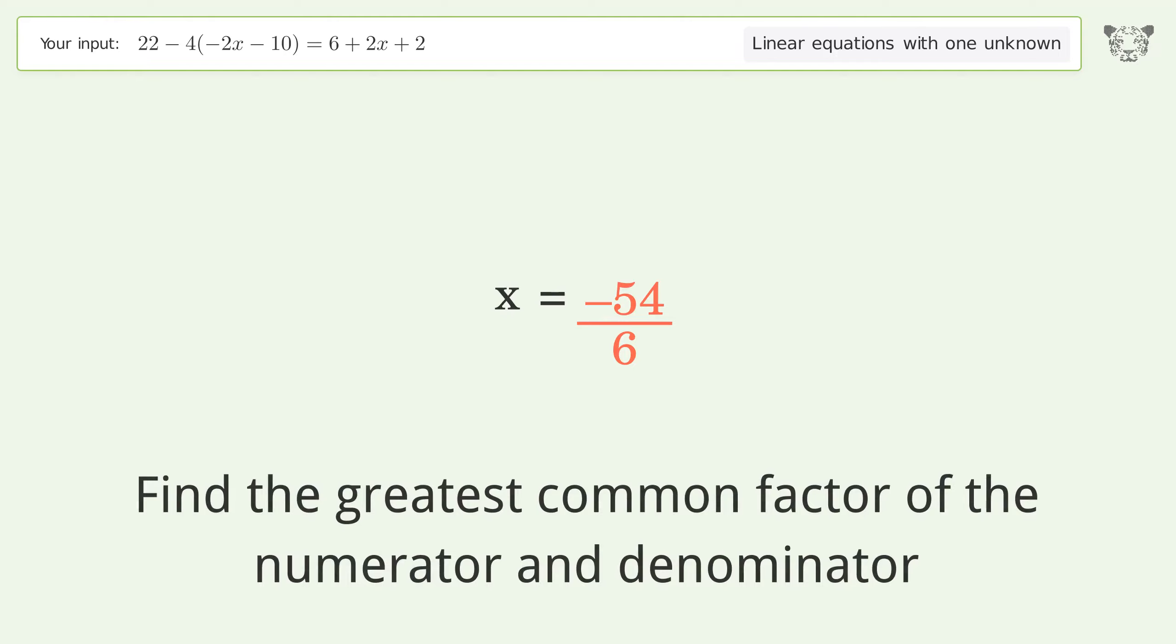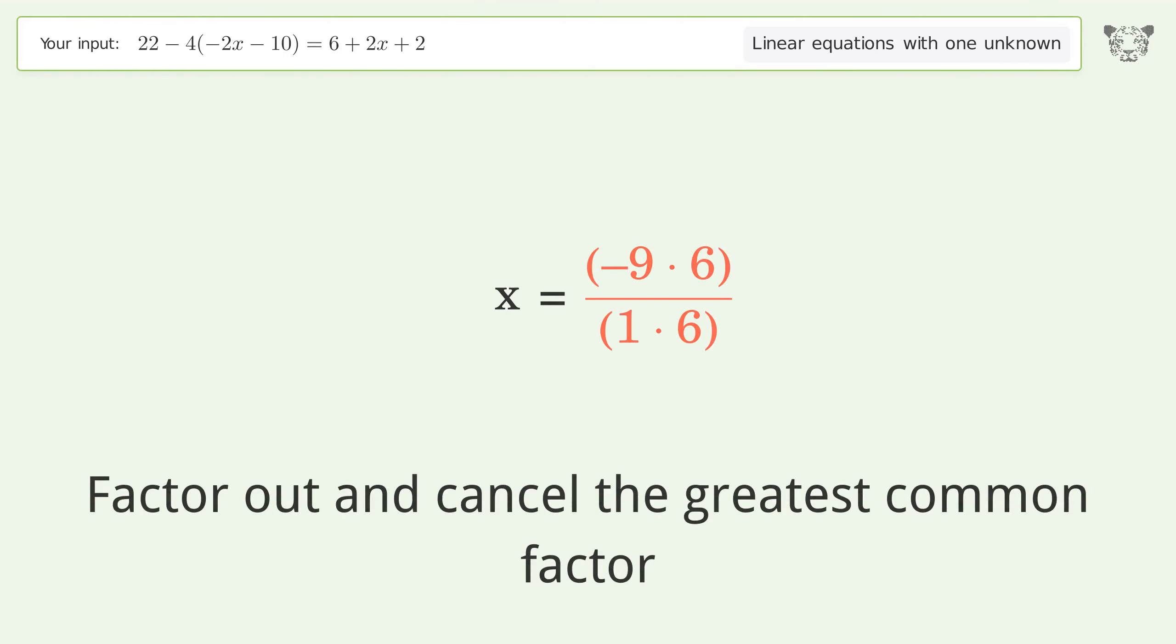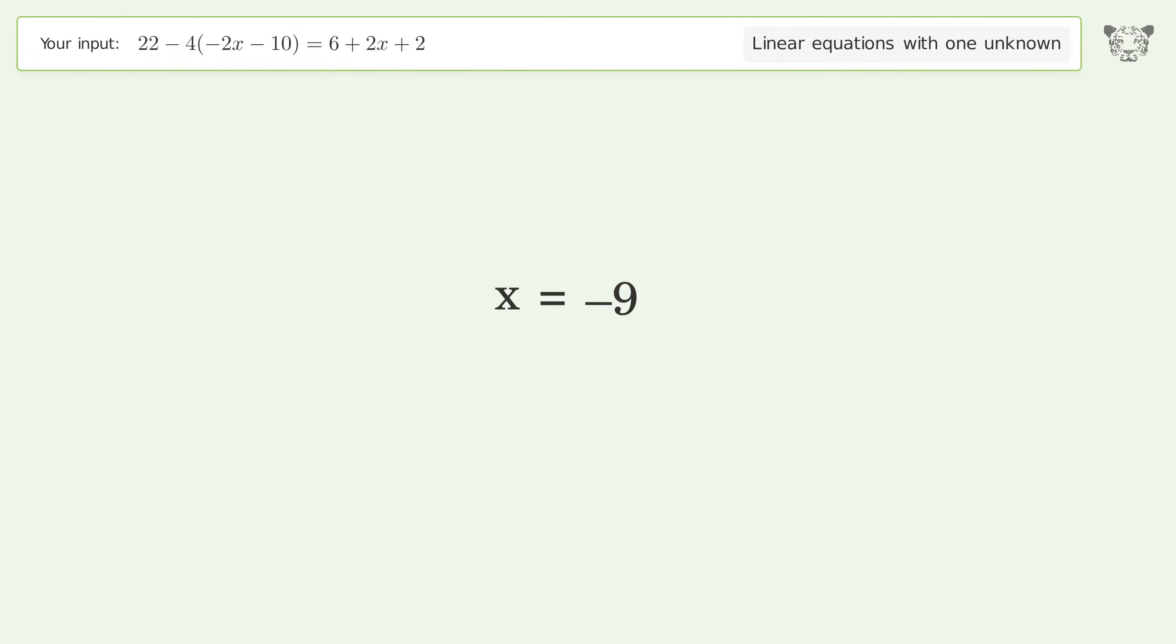Find the greatest common factor of the numerator and denominator. Factor out and cancel the greatest common factor. And so the final result is x equals negative 9.